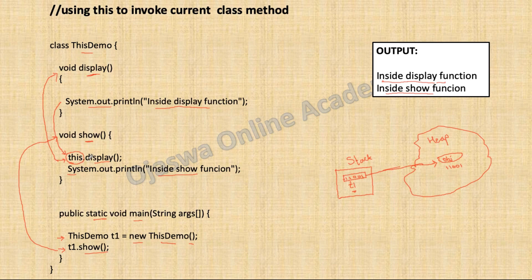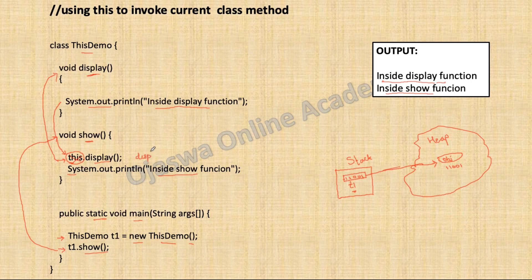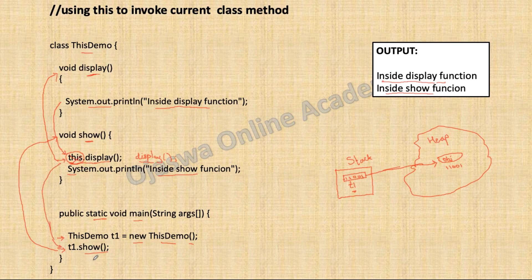The important thing to learn is that we can call a non-static method from a non-static method. Show is non-static and display is non-static, so we can call display from show using this keyword. Even if the programmer doesn't include this, you can just write display — the compiler will include this keyword and invoke the method on the current object during compilation. So to avoid the compiler's task, it is good practice to write this.display. The control comes back and the program terminates.